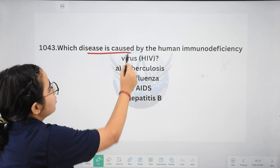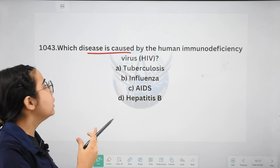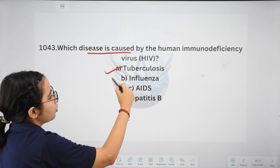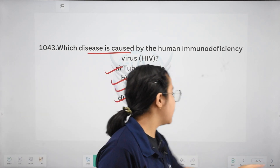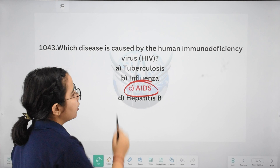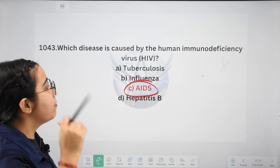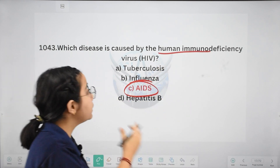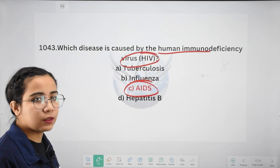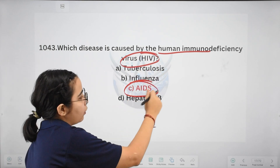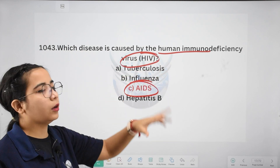Next: which disease is caused by human immunodeficiency virus, or HIV? Options: tuberculosis, influenza, AIDS, or hepatitis. The correct answer is AIDS. AIDS stands for Acquired Immunodeficiency Syndrome. HIV is the human immunodeficiency virus, and it causes AIDS.